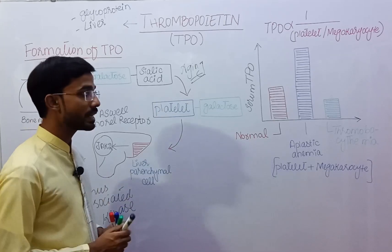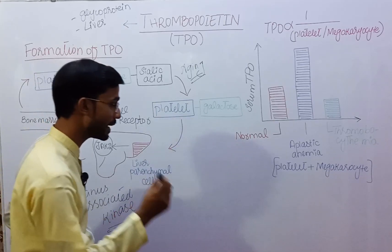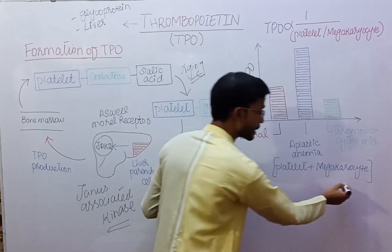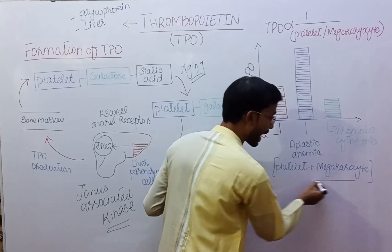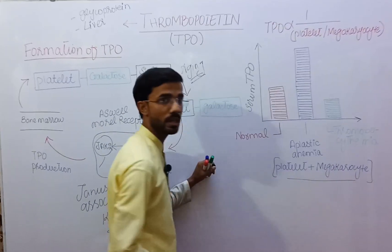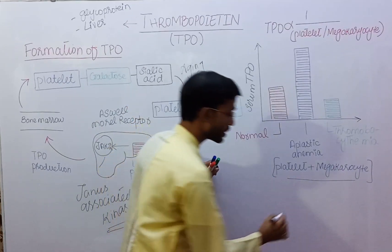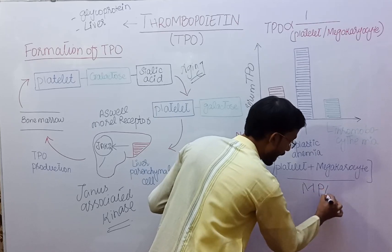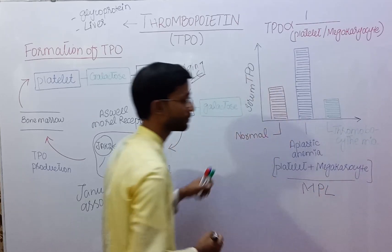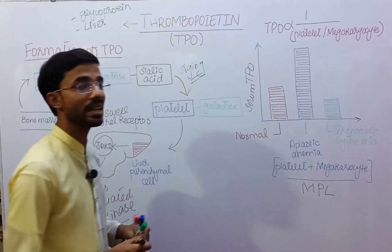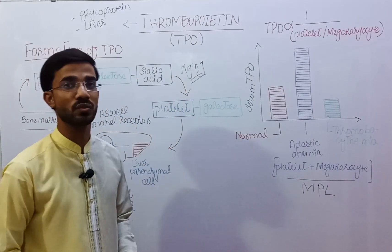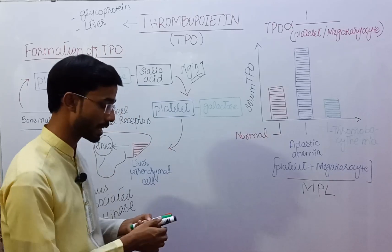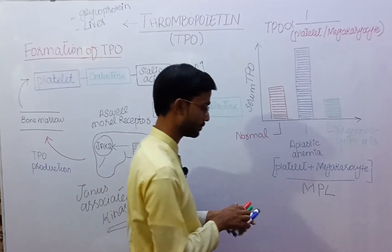An important concept to remember: platelets and megakaryocytes both have a receptor called MPL. The MPL receptor is important for the attachment of TPO.